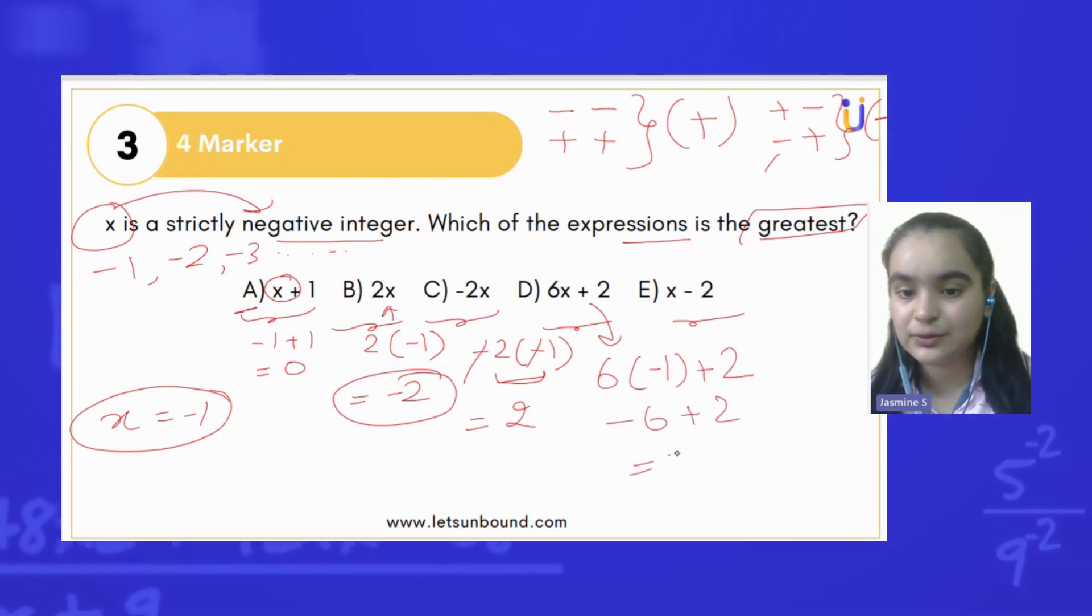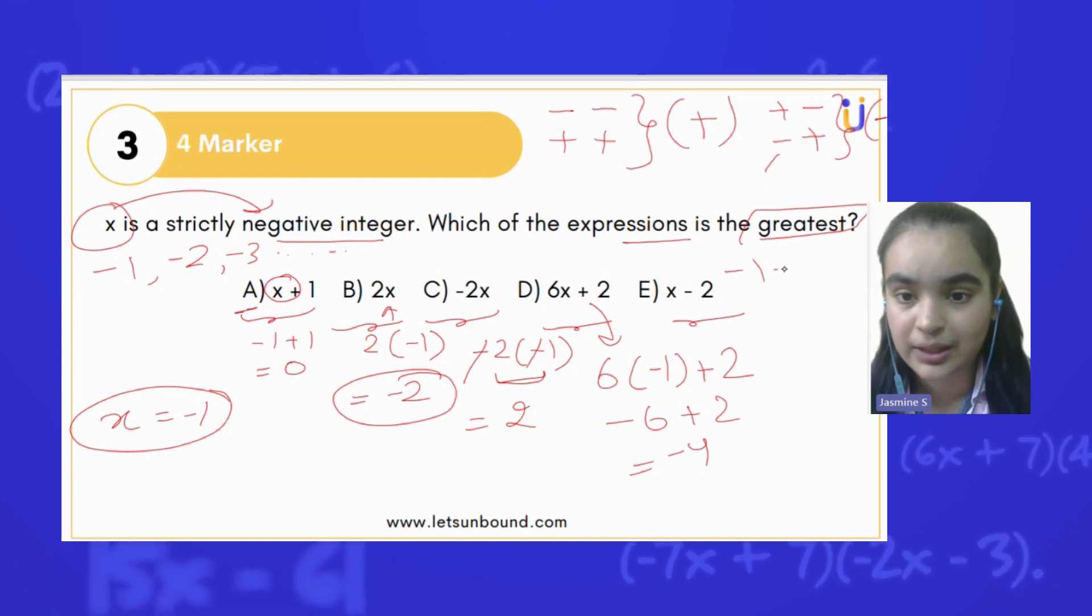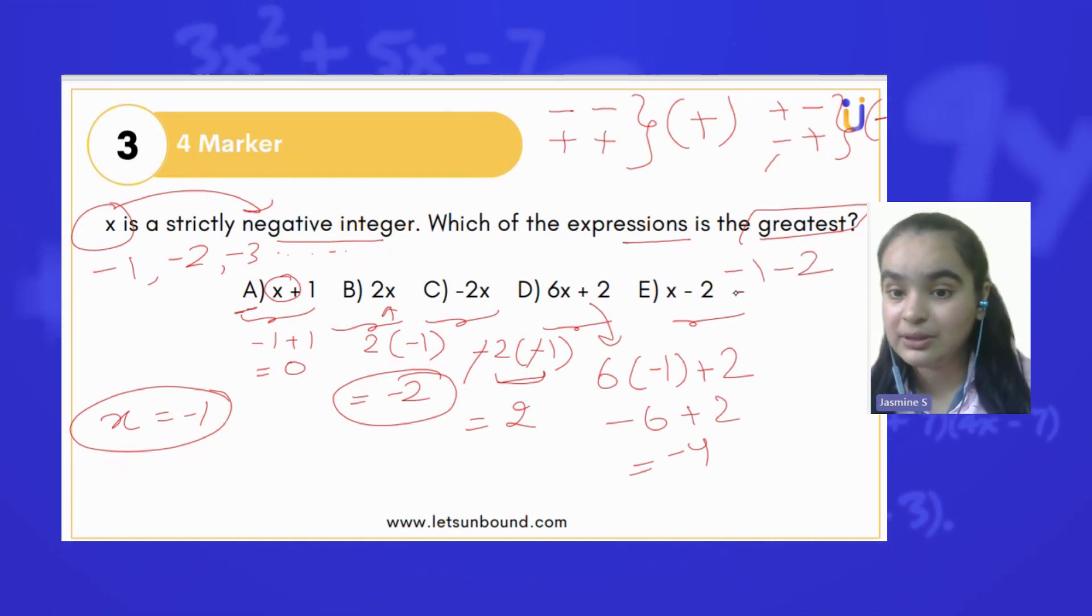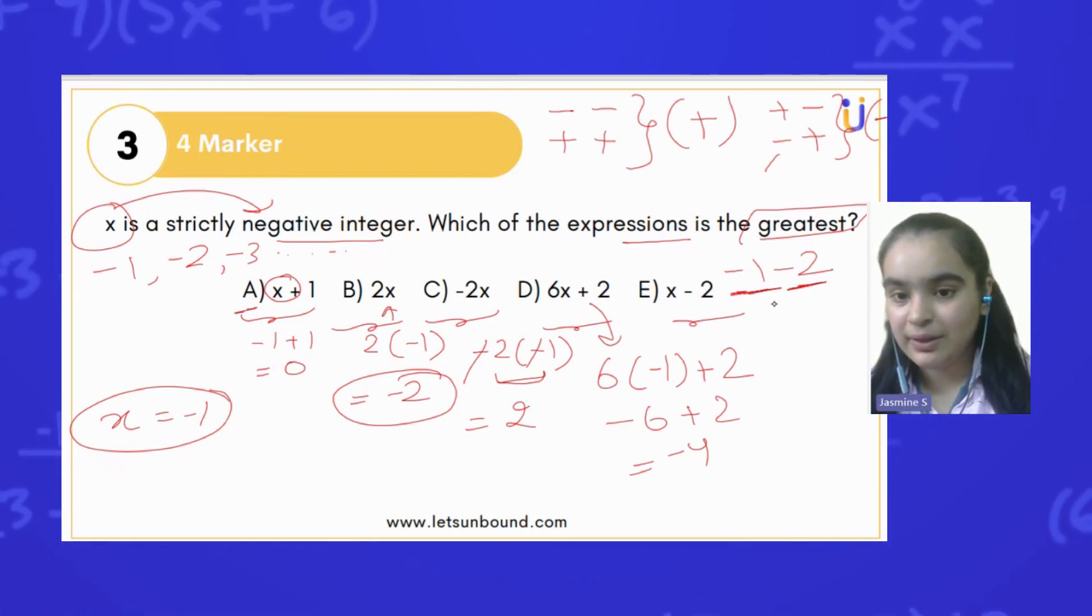For option E, if we put -1 minus 2, both signs are the same. In addition and subtraction, when they have the same signs, you can follow the big brothers rule. After solving this, minus minus becomes plus, so 2 + 1 is 3.